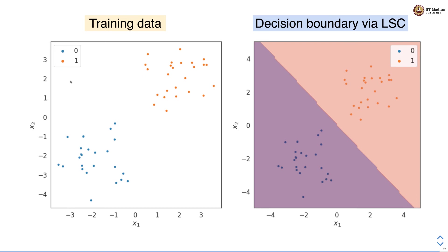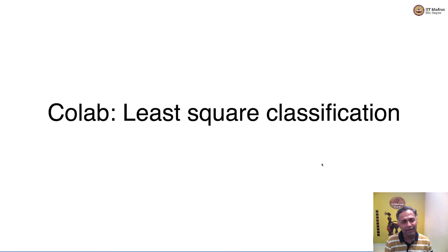Consider a sample training dataset where points from two classes are shown: the orange ones are from class 1 and the blue ones are from class 0. There are two features X1 and X2. When we learn the optimal decision boundary through least square classification, we get a decision boundary that separates the two classes clearly, with class 1 points on one side and class 0 points on the other. We will implement least square classification on a sample dataset in a colab, which is the topic of our next video.